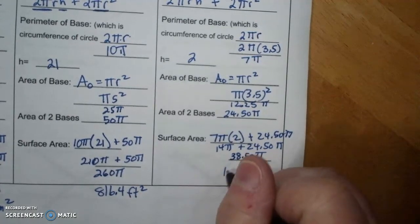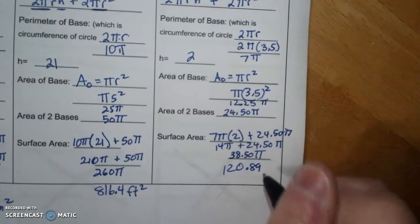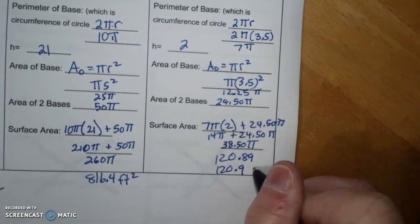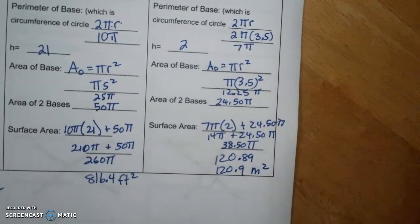Surface area would be 7π times 2 plus 24.50π, that's 14π plus 24.50π which is 38.50π, which is 120.89 rounded to the nearest tenth 120.9 meters squared. So that is finding total surface area of cylinders.